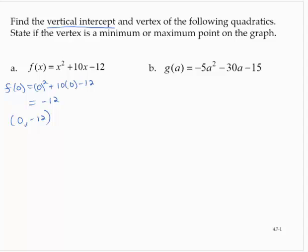Now the vertex. This is in what is called the standard form of the quadratic function. Then to find the vertex, there's a formula we can use. It turns out that the x-coordinate of the vertex is given by negative b over 2a.